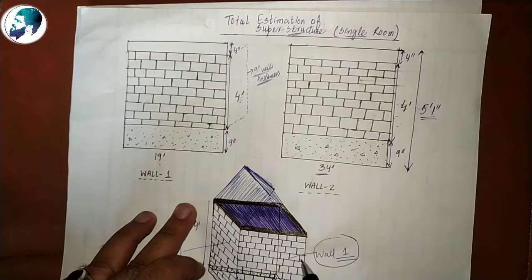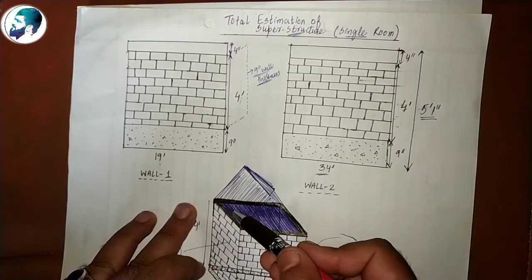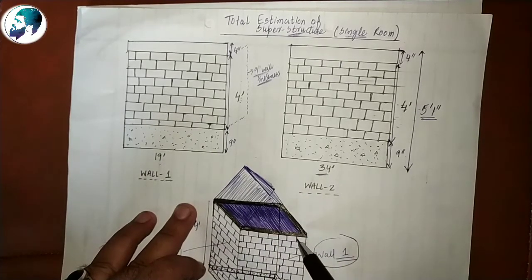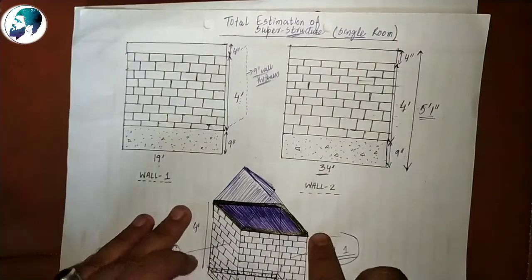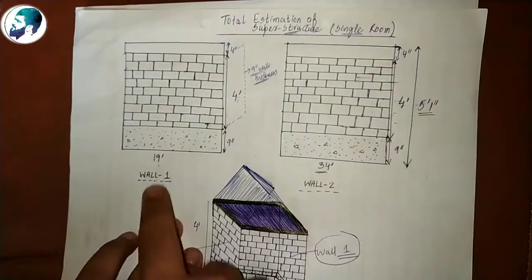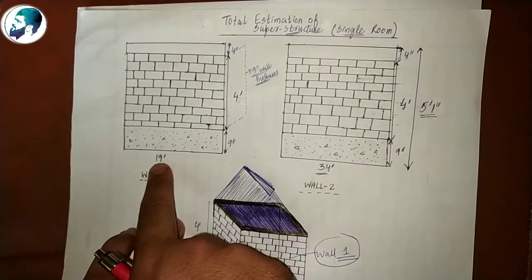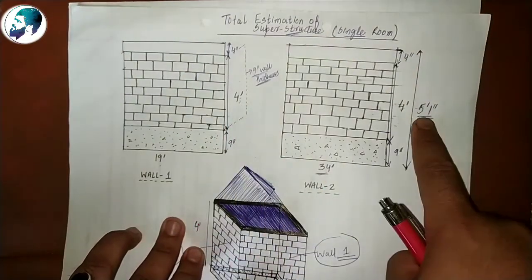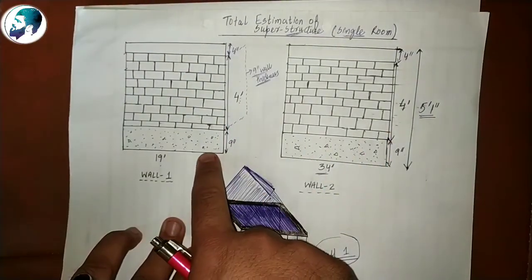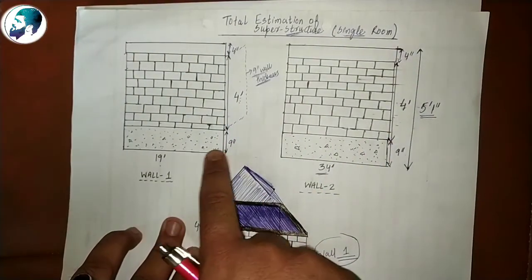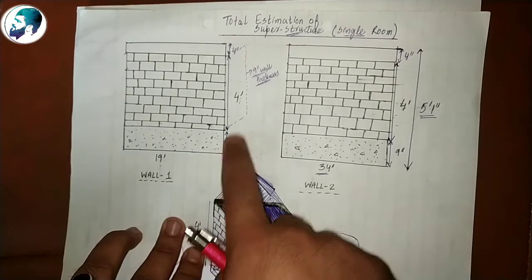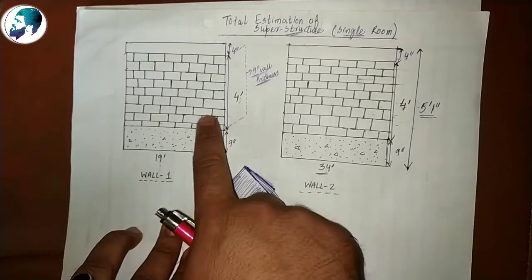Wall first is on one side, and on the parallel side there will be a similar wall. Similarly, wall second is on one side and on the other side. The total length is 19 feet and the total height is 5 feet 1 inch. The beam is 9 inches, the height of masonry is 4 feet, and the height of slab is 4 inches.